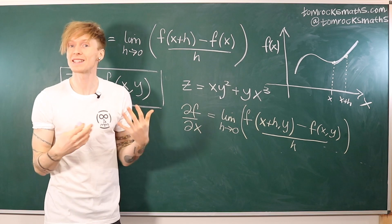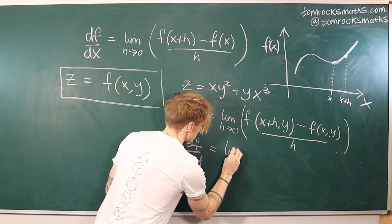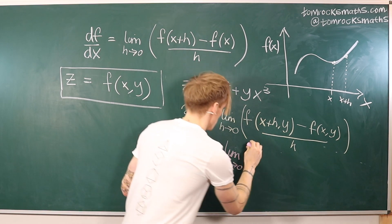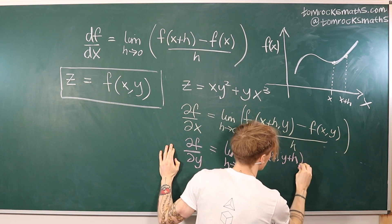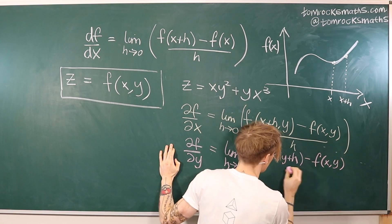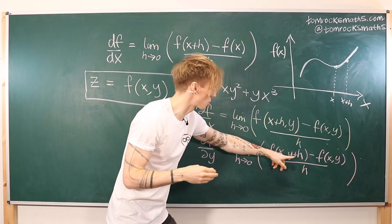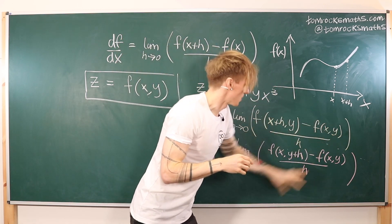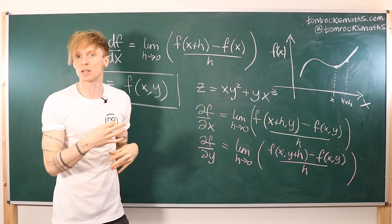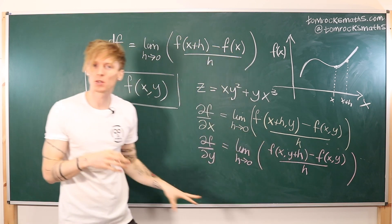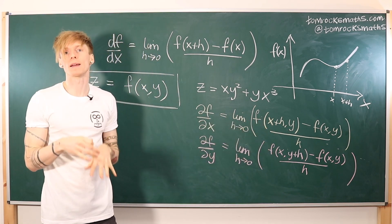The partial y derivative is very similar. Here we're interested in how f changes in the y direction. We take the same limit as h goes to zero, but now we leave x unchanged and add h to the y value, then subtract f of x, y, and divide by h. So now we do the plus h on the y coordinate, because we're interested in how the function changes when we change y and only change y. The x coordinate remains constant and we are purely moving a small amount in the y direction and then taking the limit.